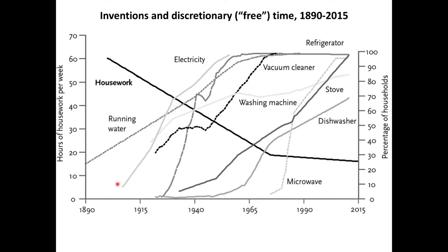If we look at access to electricity, a hundred years ago it was close to zero, and access to electricity now in the developed world — certainly in the United States — is at or very close to a hundred percent. All of these machines that now do the work for us that we used to do by manual labor now use electricity to do that work.